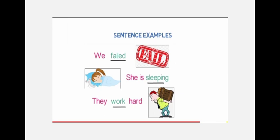Let us look at more examples. First: 'We failed.' Here also, we only have the subject and the action — the verb. We failed, but no direct object is linked with the verb, so this is also an intransitive verb. Next example: 'She is sleeping.' Here also, only the action and the subject are mentioned. There is no object to receive the action, hence no direct object linked to the action.